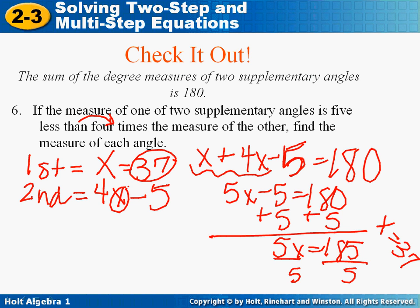So 4 times 37 minus 5, or if you like, you can subtract from 180. That gives you 148.